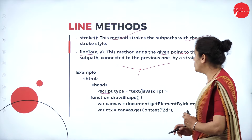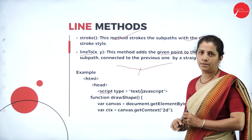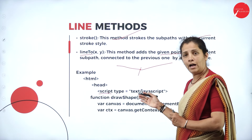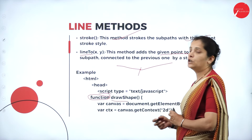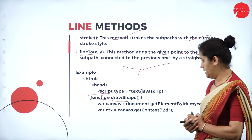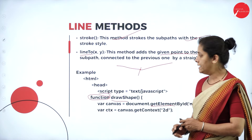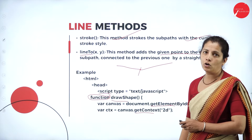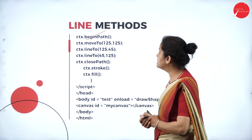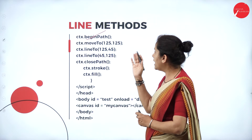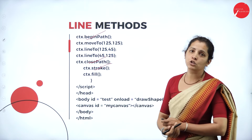In the code, I have a script tag with type text/javascript. I'm using a function — the keyword 'function' with user-defined function name 'drawShape'. I receive the canvas id through getElementById and create a rendering context using getContext. Then I use line methods: beginPath, moveTo, lineTo, lineTo, closePath. I can also call stroke and fill.